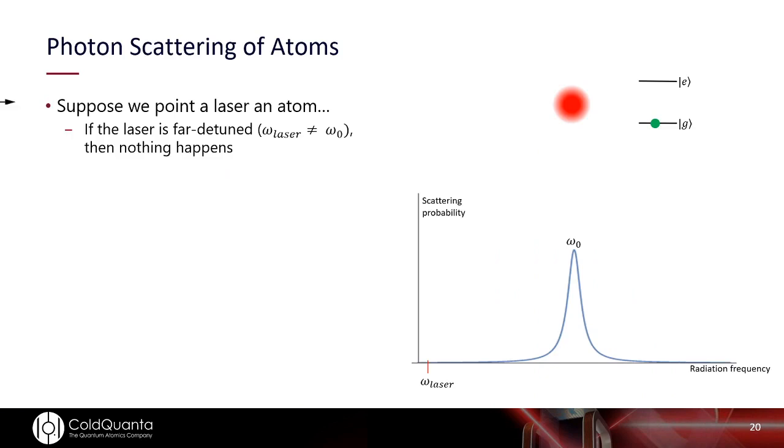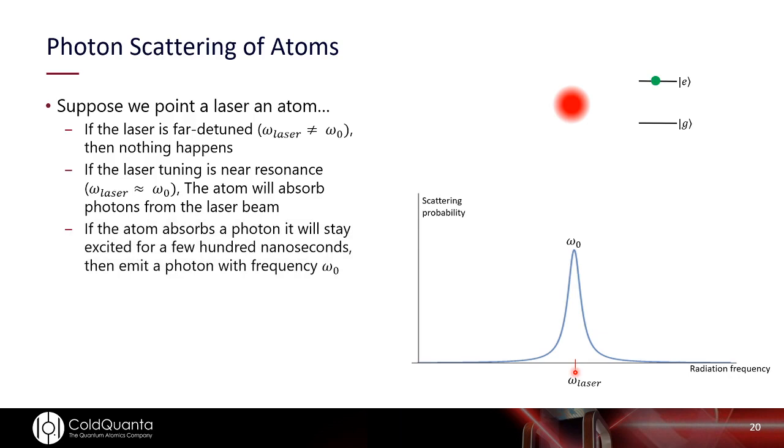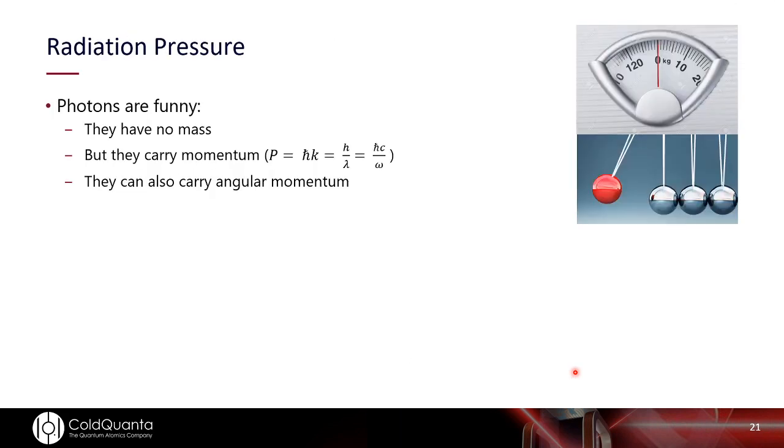So let's think a little bit about what does it look like to scatter light off these atoms. If I shine a laser at the atom, and my laser is far detuned from the resonance, then nothing happens. The photon just whizzes by. But if I tune my laser frequency so that it's resonant with the transition, now the atom will tend to absorb that photon, excite that valence electron into the excited state, it will hang out there for a few hundred nanoseconds, and then it will emit a photon, and the direction of that photon will be random.